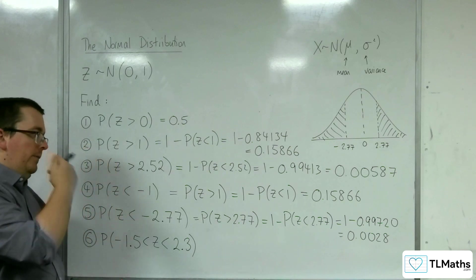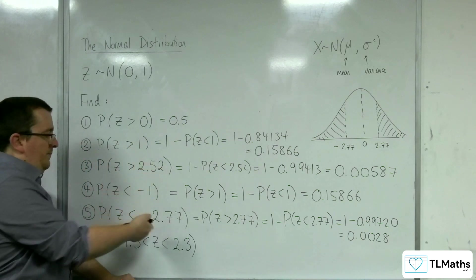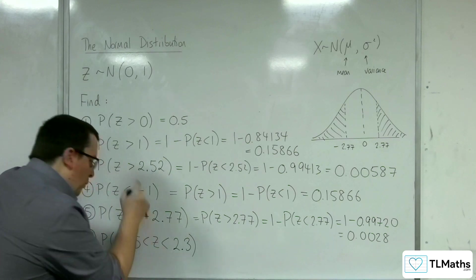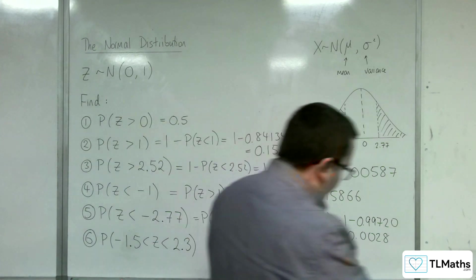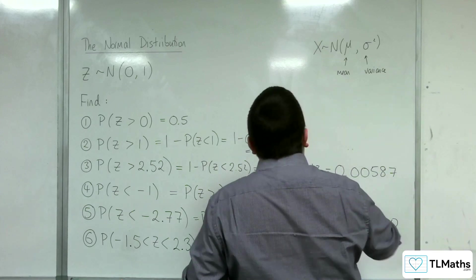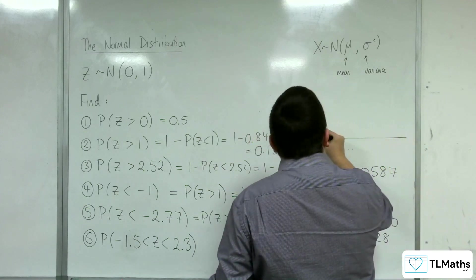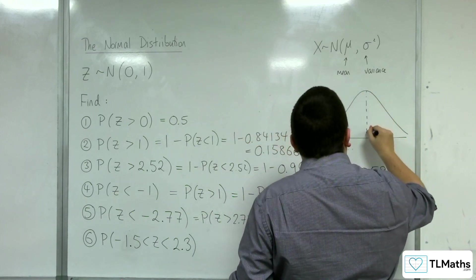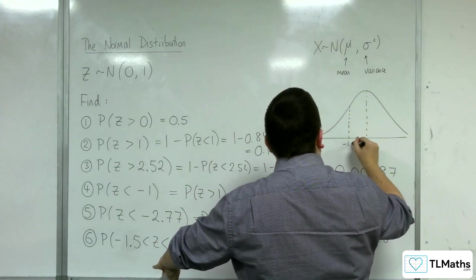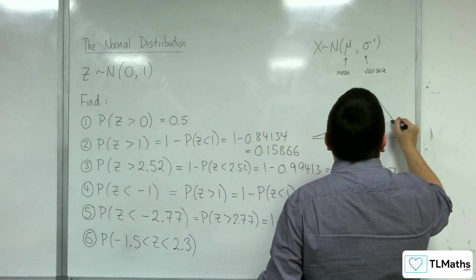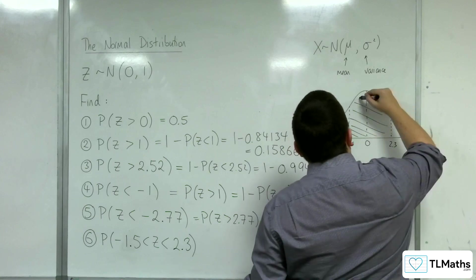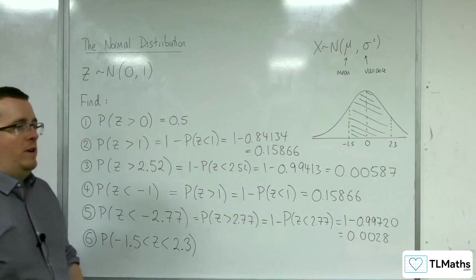Right, so that's how you deal with greater thans and negatives. So bringing it all together then, what about that one? Right, so let's draw a diagram. There's 0. So we've got minus 1.5, there it is, and then 2.3.